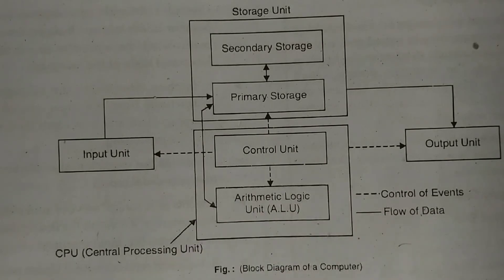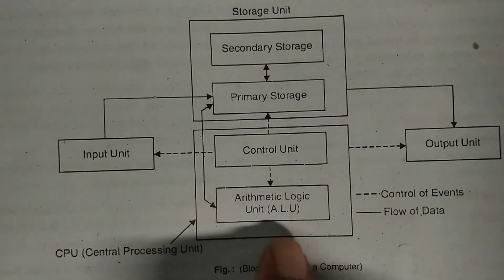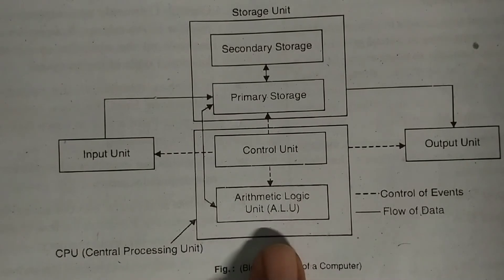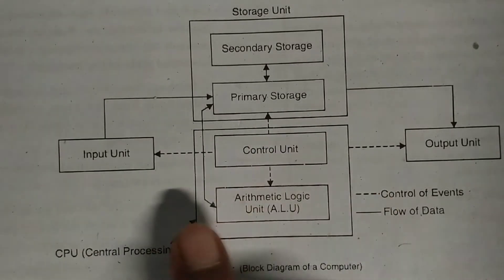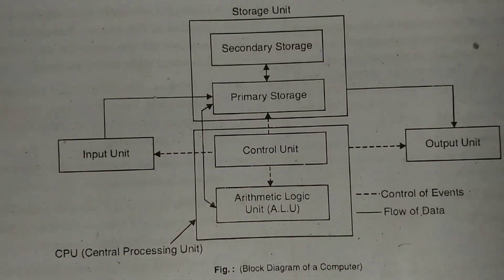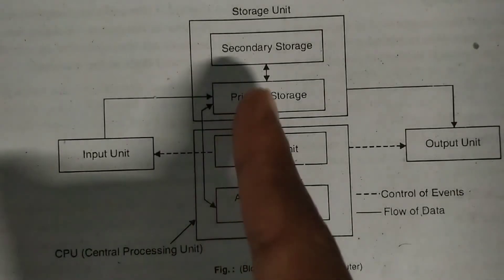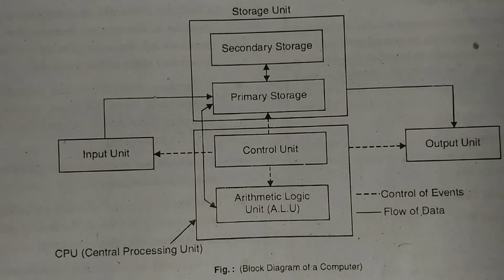The control unit ensures the data reaches the correct place at the correct time. The arithmetic logical unit performs all arithmetic and logical operations — arithmetic operations such as addition and subtraction of numbers, and logical calculations. All operations are performed in the ALU, while the control unit controls all operations of input and output devices and controls the flow of data, fetching and retrieving data from memory.